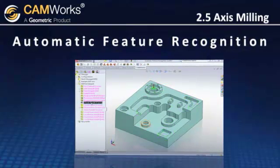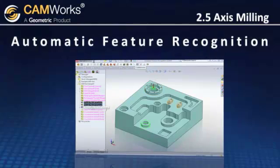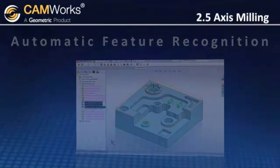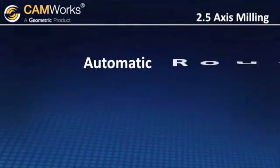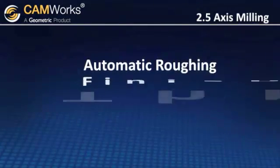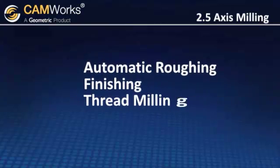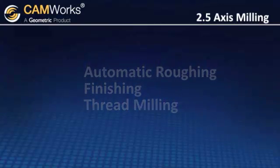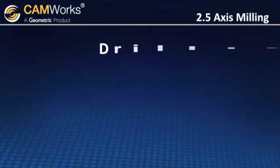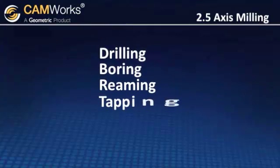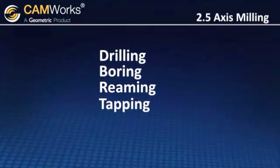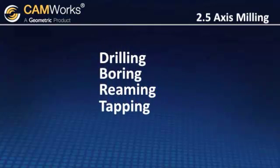Two-and-a-half axis milling includes automatic roughing, finishing, thread milling, as well as standard single-point cycles such as drilling, boring, reaming, and tapping to machine prismatic features.